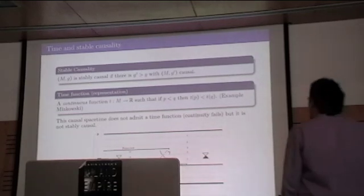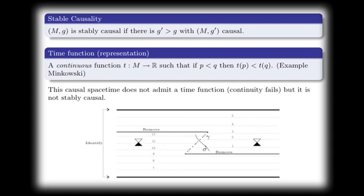Also, we have what is a time function. Well, there are many concepts of time. In general relativity, there is the proper time, but there is also the time function, which is a continuous function that increases over every causal curve. This is the technical definition. For instance, any observer in Minkowski space-time has an associated time function.